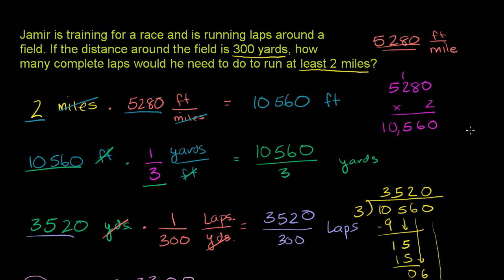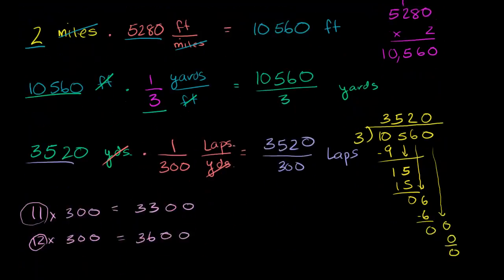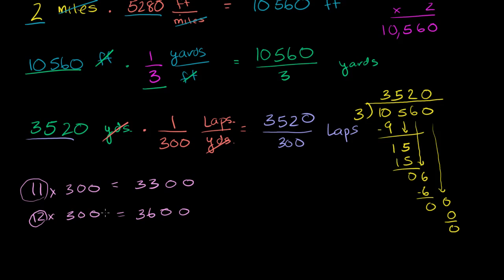But let's make sure we're answering their question: how many complete laps would he need to do to run at least 2 miles? The exact answer is 11 point something laps. Eleven complete laps would not be enough, so he would have to run 12. Our answer is 12 complete laps — that's the smallest whole number of laps that gets him to at least 2 miles.